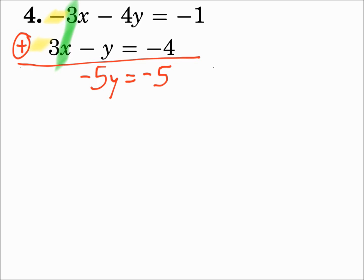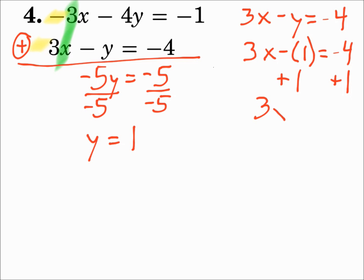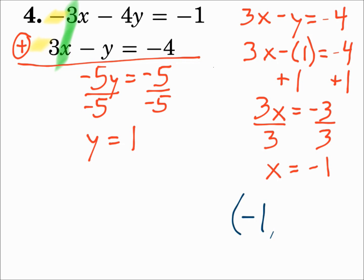Negative 4y plus negative y is negative 5y, equals negative 1 plus negative 4 is negative 5. Now solve the remaining equation for y. Divide both sides by negative 5, and y is 1. Now substitute 1 in for y in either equation — we'll do the second one. 3x minus y equals negative 4, and y is 1, so we'll substitute 1 in for y. Add 1 to each side, 3x equals negative 3, and divide both sides by 3. x equals negative 1. Your final answer as an ordered pair: negative 1 comma 1.